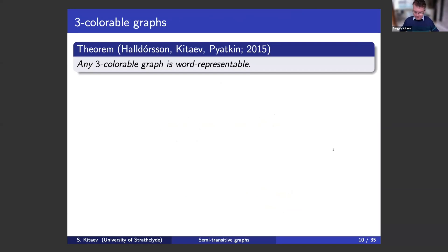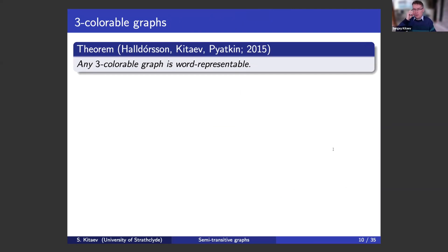Hopefully you understood how this branching process works. This is our main means to actually prove that something is not representable or not semi-transitive. If you would like to find a semi-transitive orientation, you could also follow the branching process, but normally we actually do it differently. Normally, we try to guess a semi-transitive orientation, and then we try to prove that this is actually semi-transitive.